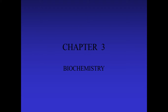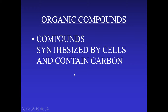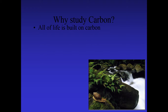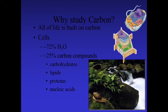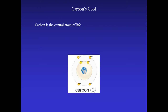Chapter 3 is on biochemistry — the chemistry of life. We also refer to biochemicals as organic compounds: compounds synthesized by cells that contain carbon. All life is built on carbon. Cells are made of 72% water and 25% carbon compounds. Carbohydrates, lipids, proteins, and nucleic acids are the four main macromolecules of life. We also have about 3% salt and a few minerals.